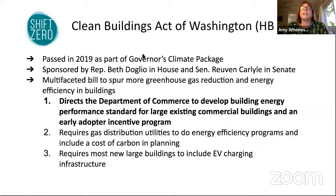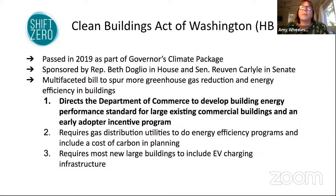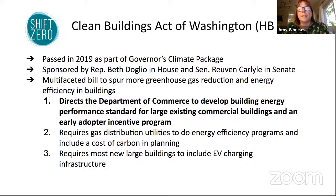In 2019, Governor Inslee had a big climate package taking a multi-sector approach to addressing emissions. This bill took a hard look at buildings. Sponsored by Representative Dolio in the House and Senator Carlisle in the Senate, it did three things: it directed the Department of Commerce to develop energy use performance standards for large existing commercial buildings and set up an incentive program; it requires gas distribution utilities — Puget Sound Energy, Avista, Cascade Natural Gas, Northwest Natural — to do energy efficiency programs and include a cost of carbon in their planning; and it requires most new large buildings to include EV charging infrastructure going forward.